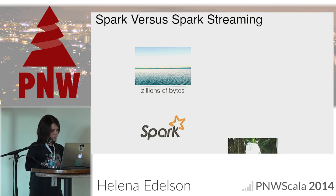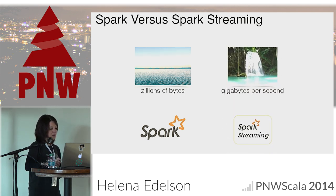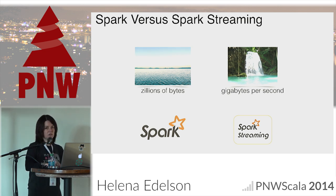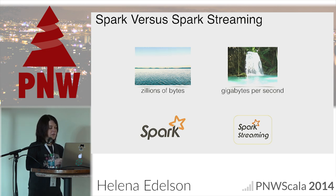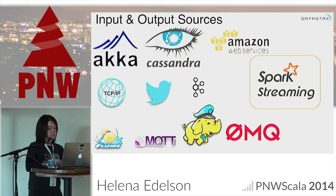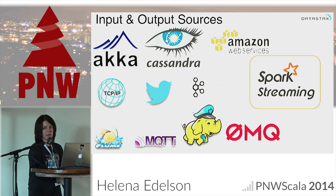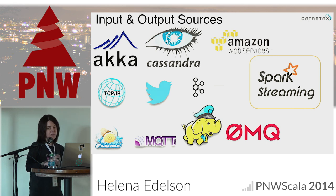Spark Streaming: we're talking about working with zillions of bytes versus gigabytes of data per second. It's an extension of the core API that enables high-throughput, reliable processing of live data streams. You can express sophisticated algorithms easily using high-level functions to process those data streams. Importantly, it does exactly-once message guarantees, which is difficult to achieve. It integrates with many different types of data sources and is extremely flexible — when you look at these streaming APIs, as I'll show in the code, it's very easy to work with.